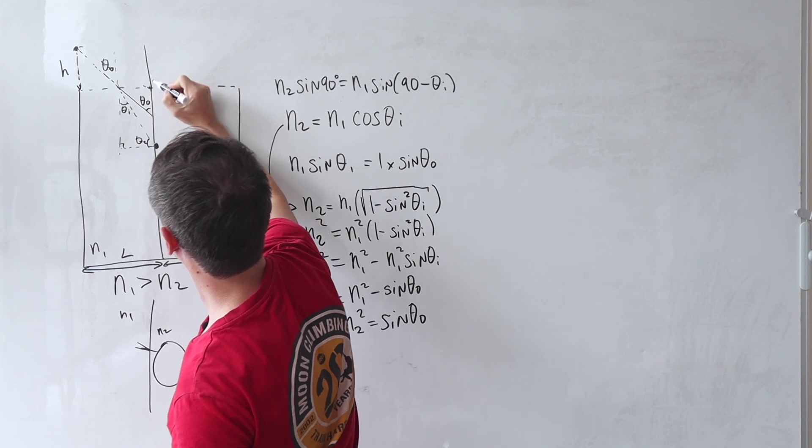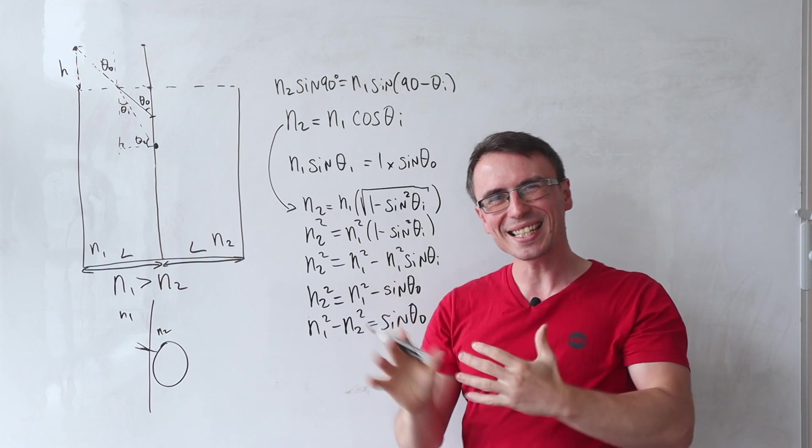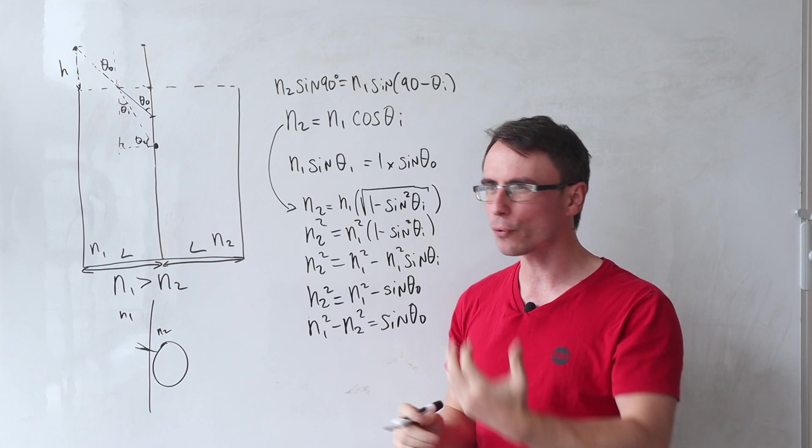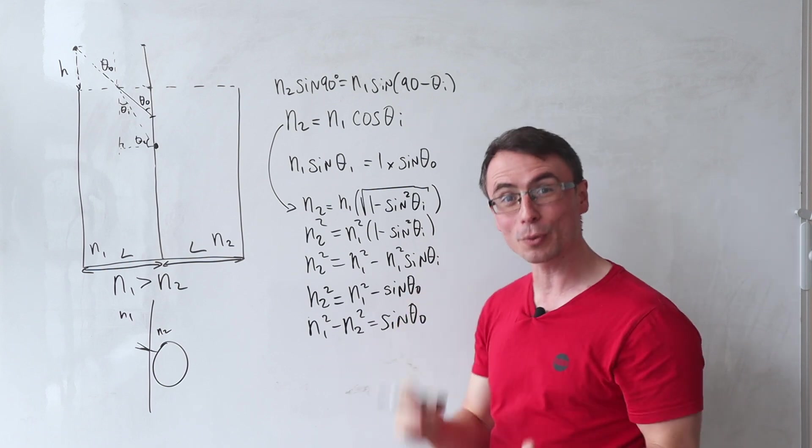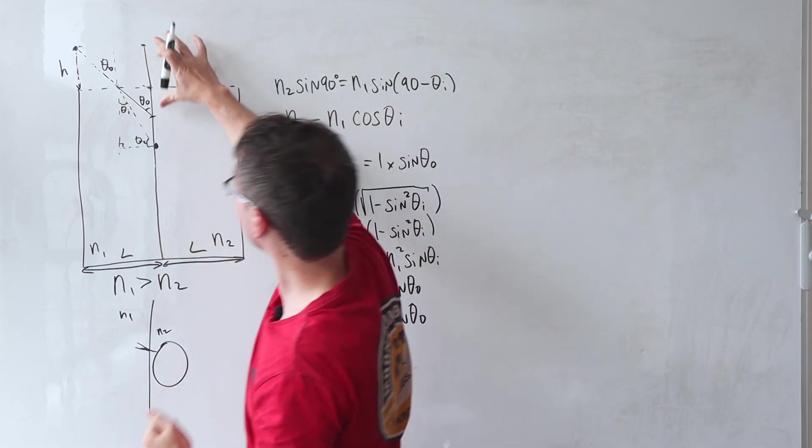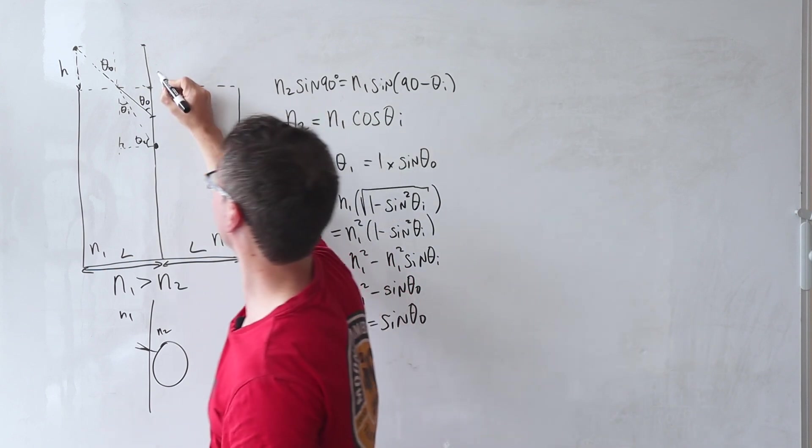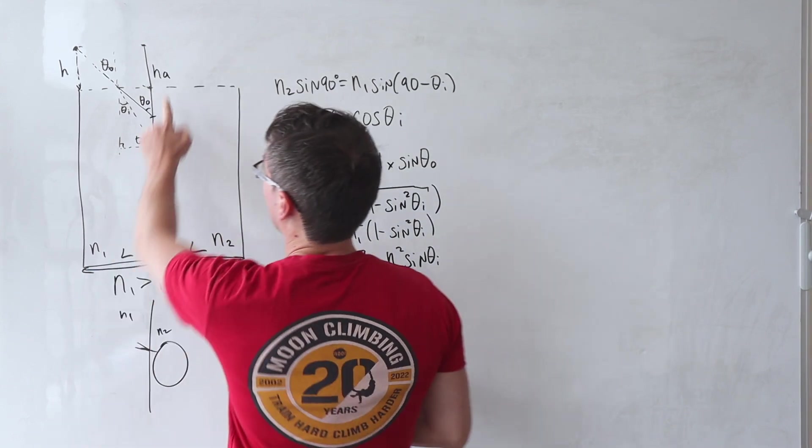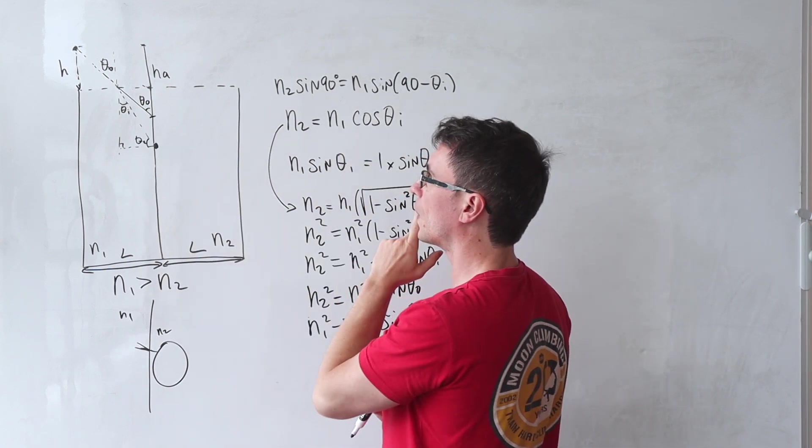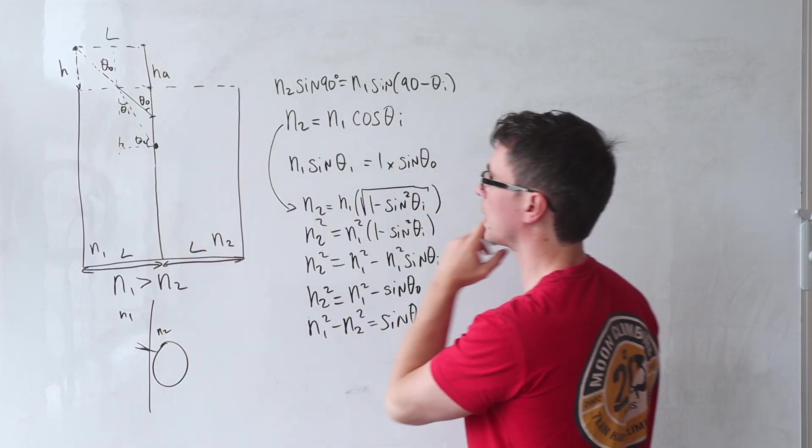If this angle here is theta naught with respect to the vertical, that should make this one theta naught. So let's give some symbols across here. And this is I think a crucial tip. If you are taking the PAT entrance exam, feel free to write down variables which are not given in the question, but are very important for the solution. For instance, this distance from here to here which is not really given in the question is really important. So I'm just going to call that h subscript a for apparent height.